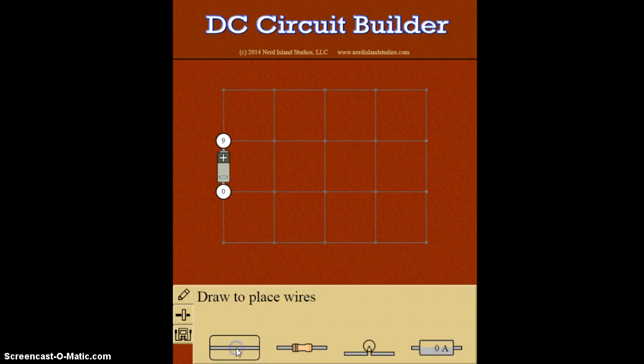Say I want to have a piece of wire. Click on there. I can add a wire to there. Say I want to put a resistor. Click on there. I've got a resistor, another piece of wire.